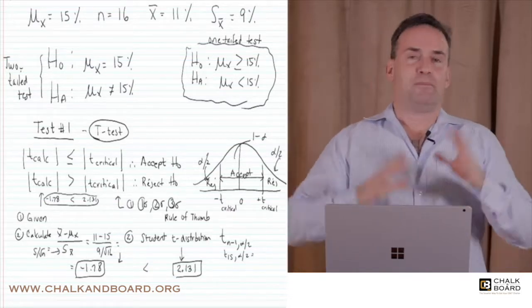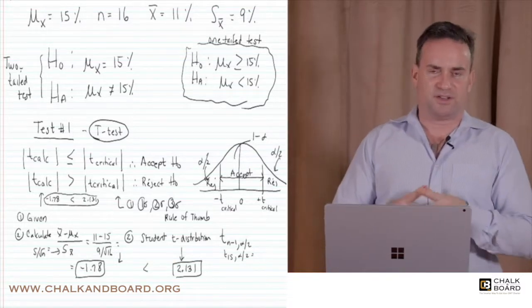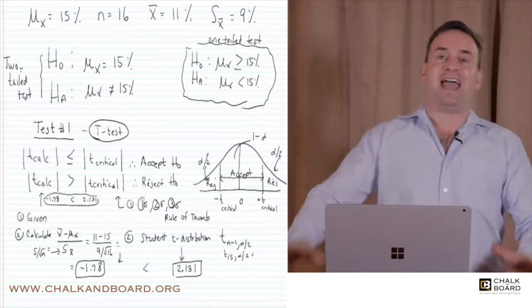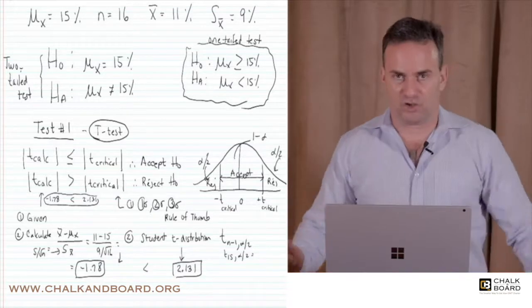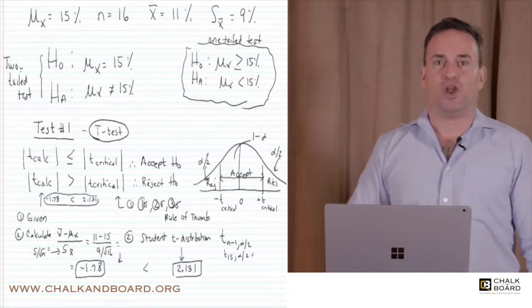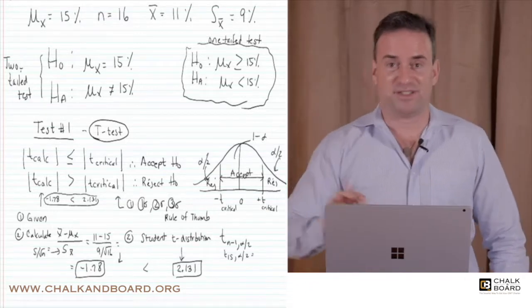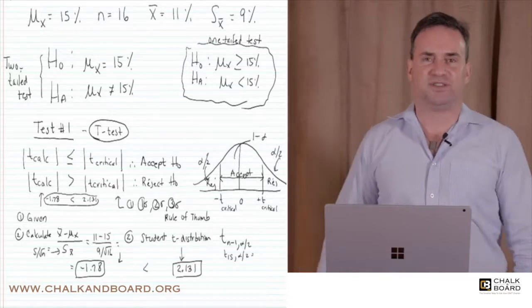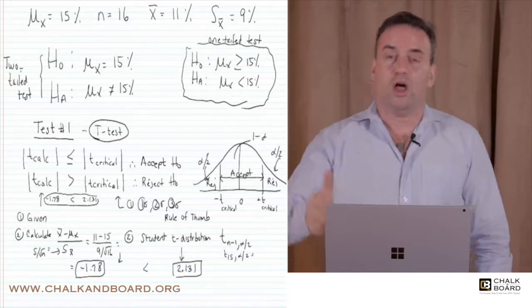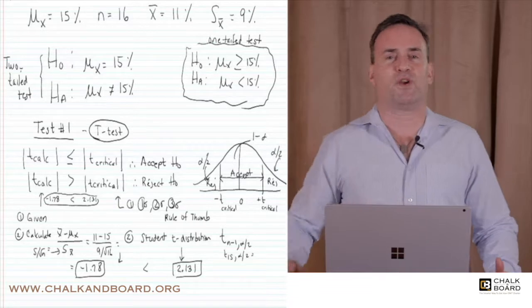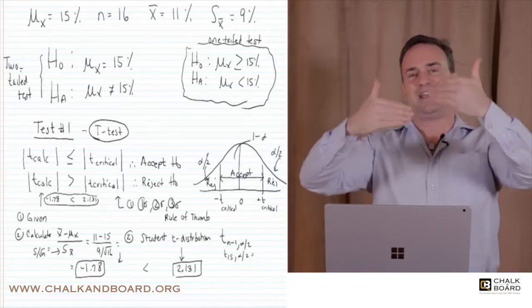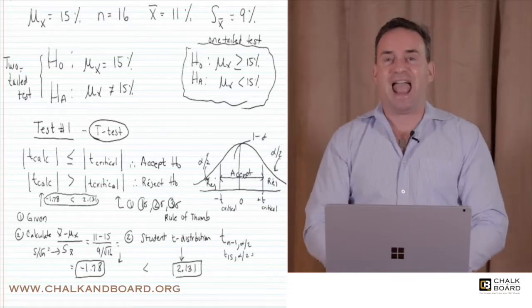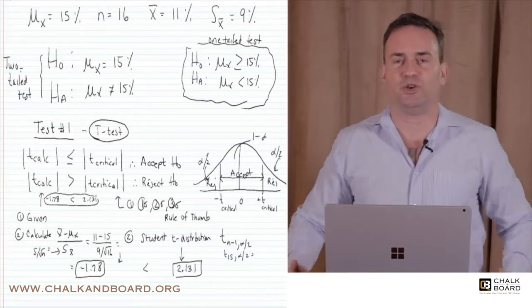If the population variance is unknown, we need to know if the sample size is large or small. If the population variance is unknown and the sample size is very small, we use the t-distribution. In this example, we didn't know the population variance — we had the sample standard deviation but not the population variance. Any time the sample size is over 30 or 40 observations it's considered large; since we only had 16 observations, it's a small sample. So when the population variance is unknown and the sample size is small — less than 30 or 40 observations — we use the t-distribution with its degrees of freedom.